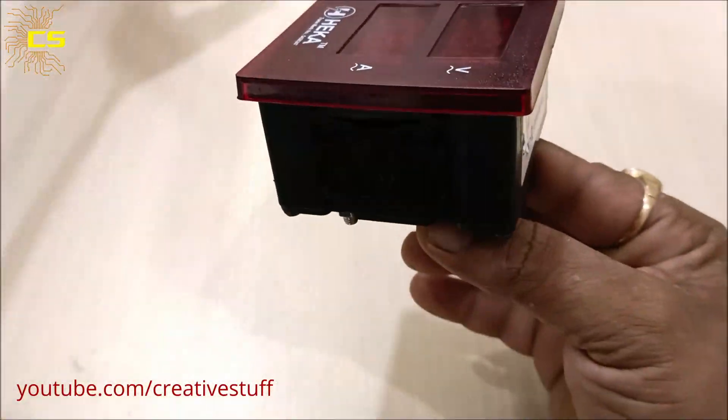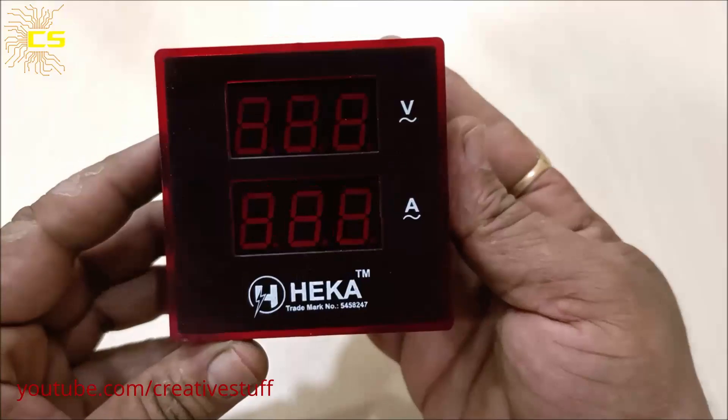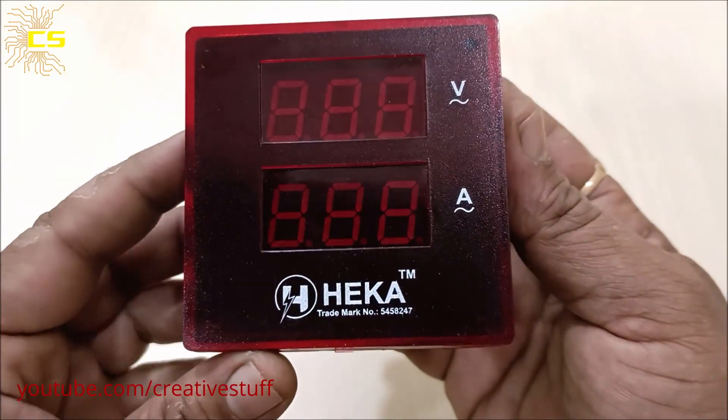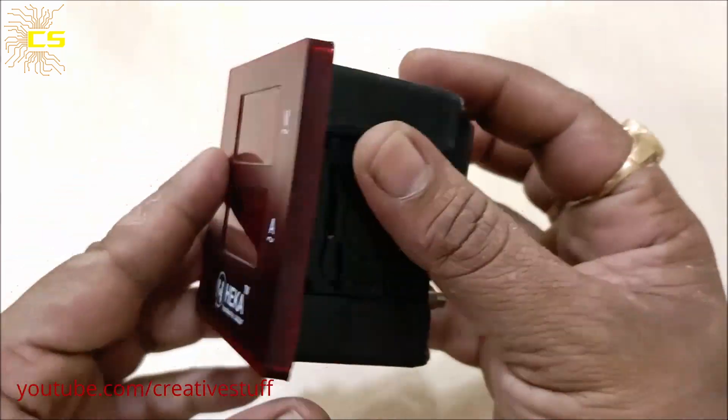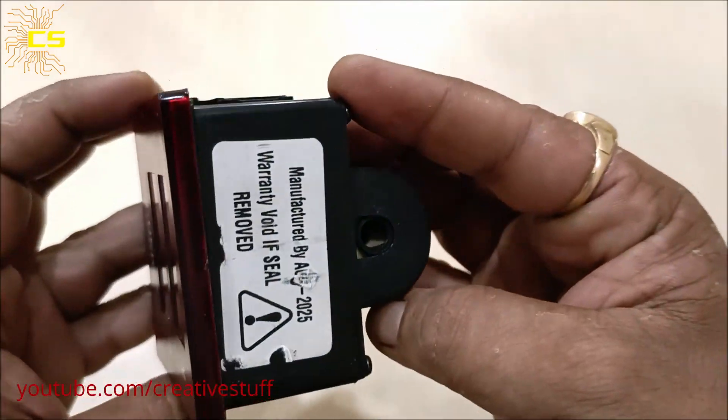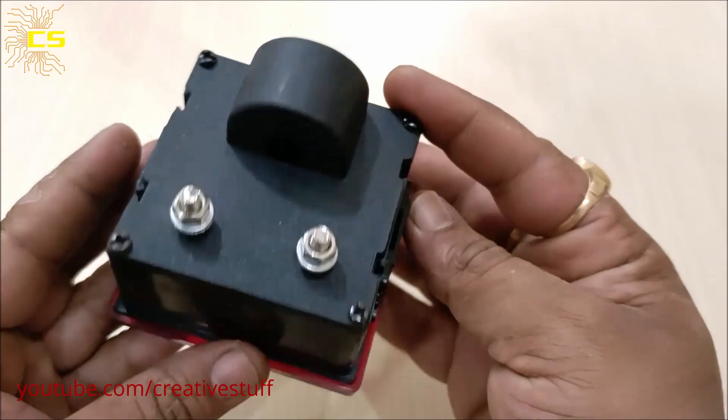As you can see, this is the meter. It comes with a CT attached to its back side and two terminals to connect phase and neutral lines.